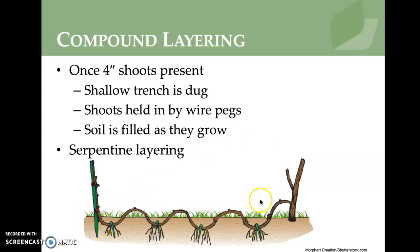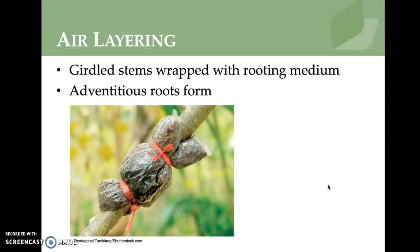Air layering involves a wound wrapped with sphagnum moss and covered in plastic, providing a moist, dark space for roots to initiate and grow. It looks like a small ball wrapped around the stem. The moss serves as a rooting medium, and the goal is for roots to form within it.